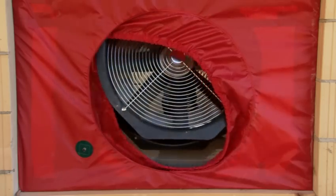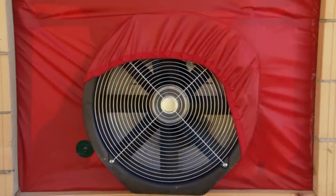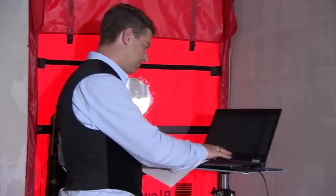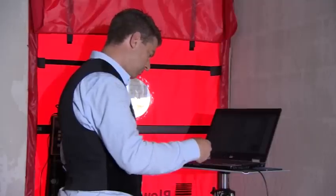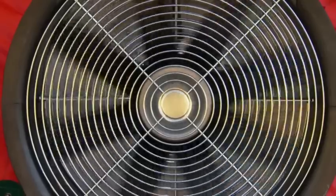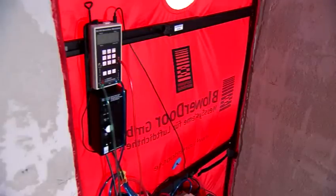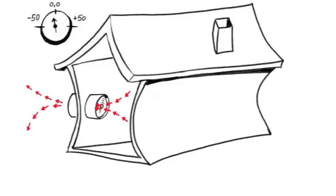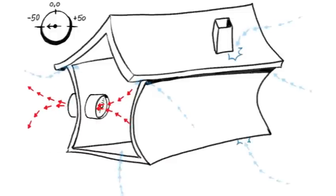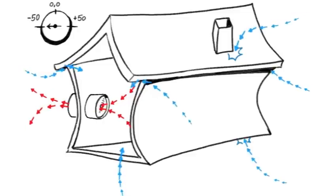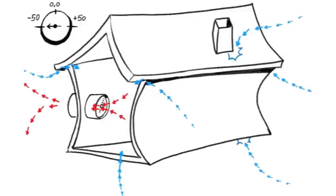The main component of a blower door test set up is a powerful fan. The fan is installed in the opening of the membrane. The values required for measuring are programmed in and measuring begins. Negative pressure builds up inside the structure. The membrane at the measuring apparatus bulges inwards. The fan blows the indoor air out of the structure to produce a negative pressure of 50 Pascal in the interior. Through leaks in the building envelope, cold air flows into the house. It is the tester's job to determine how much air flows in via the envelope surface and how much is blown out by the fan.